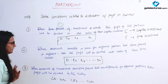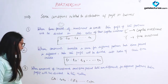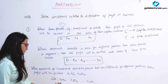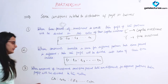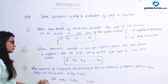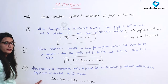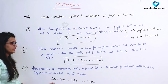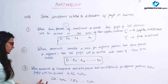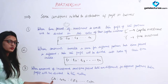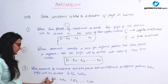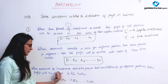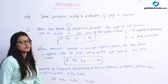The third condition: when both the amount of investment and the time period are different for different partners, then the profit will be divided in the ratio C1·T1 : C2·T2 and so on. Here C1 is the amount the first partner invested and T1 is the time period for which they invested. Similarly for the second partner — capital into time period.